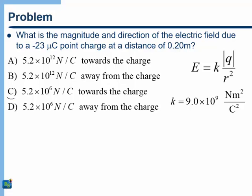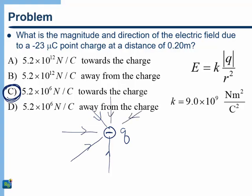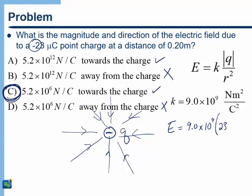The correct answer is C. Negative charges create electric fields that go towards them, so we can immediately eliminate any answer showing the field pointing away. Then it's just plugging in values: E = k|Q|/r² = (9 × 10⁹)(23 × 10⁻⁶)/(0.20)². You don't even really need a calculator — the correct power of 10 is 6, not 12.